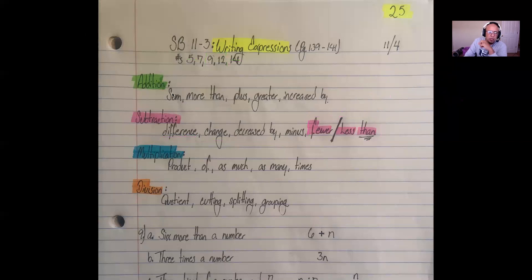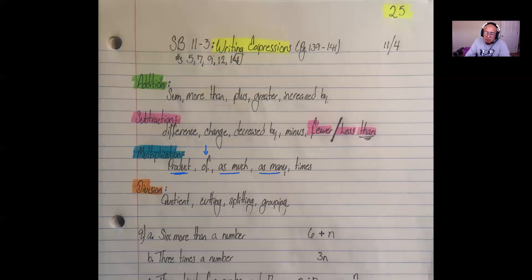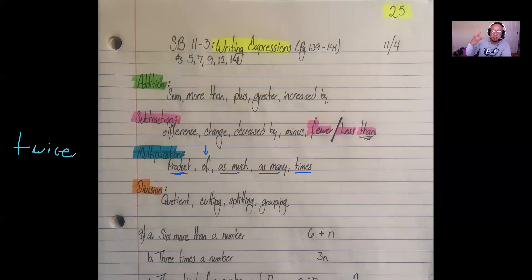Let us continue with multiplication. The word product always means multiplication, especially when dealing with fractions. The word of — like two-thirds of something or one-half of something — usually means multiplication. Phrases such as as much, as many, or the word times also mean multiplication. Additionally, the word twice means multiplying by two, same as double, which also means multiplied by two.